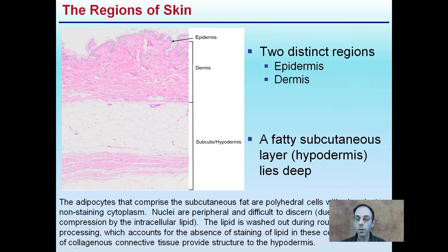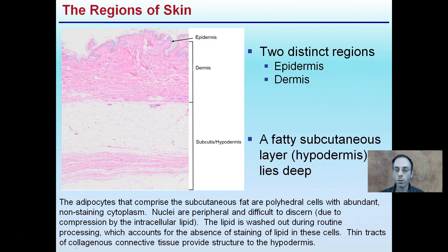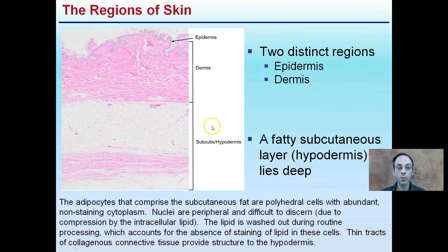So, regions of the skin — just to go over a couple. Two distinct regions: we have the epidermis, with 'epi' meaning top, and then the dermis being the lower level. But the lowest level here is the subcutaneous level or the hypodermis. This is a fatty layer, and it lies deep within the layers of the skin.